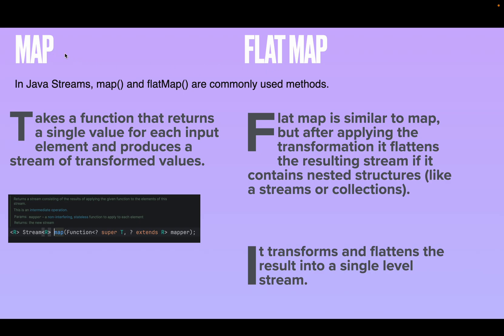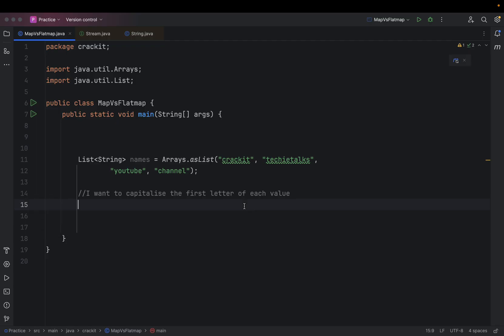In Java Streams, map and flat map are inevitable methods. We use them commonly in our daily work. Without map, I don't think I have used Java Streams effectively — that's how powerful this map method is. Before we understand the differences, let's first try to understand what map is and how it works, what flat map is and how it works, and then the differences between them.